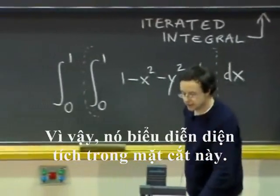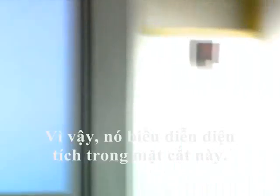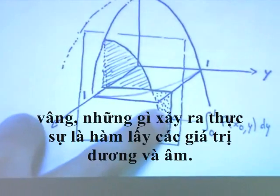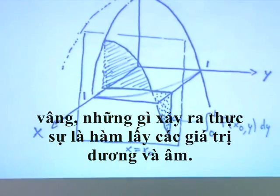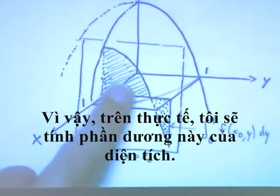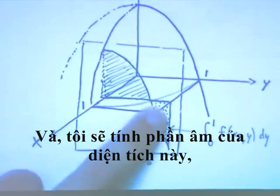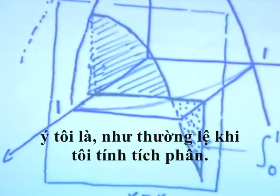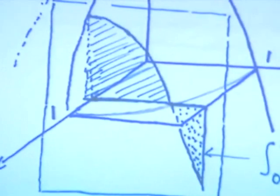So what that represents is the area in this slice. So see here, actually, I have drawn, well, what happens is actually the function takes positive and negative values. So, in fact, I will be counting positively this part of the area. I mean, as usual, when I do an integral.